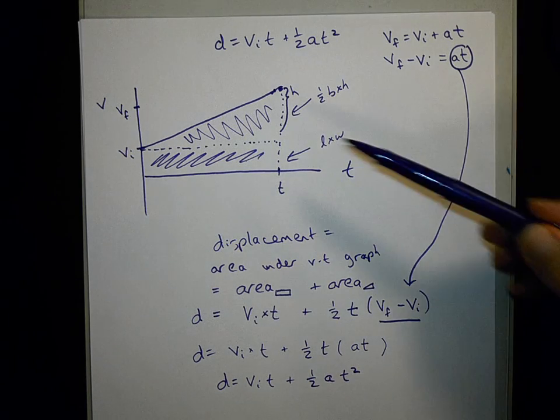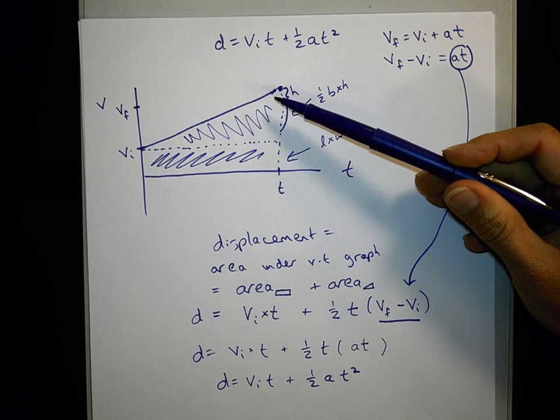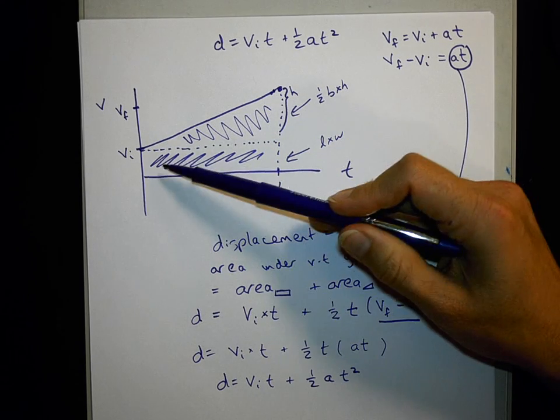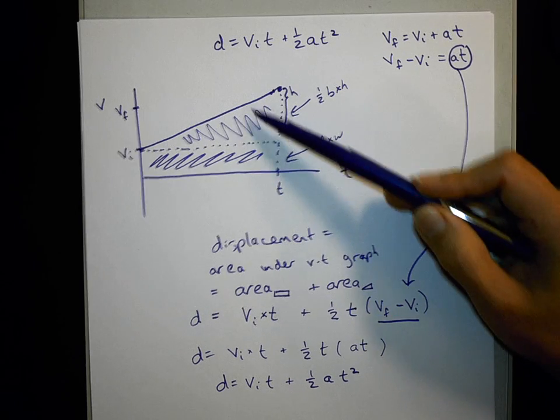Just using the idea that displacement is the area under a velocity graph. And this generic velocity graph had two areas, it had a rectangle, and it had a triangle.